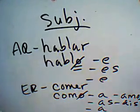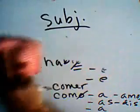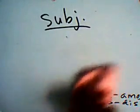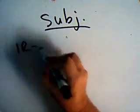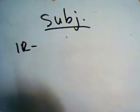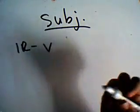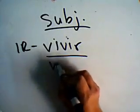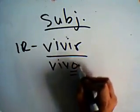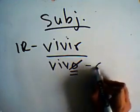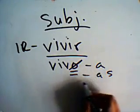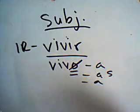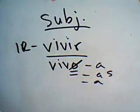This is important because command forms use the subjunctive forms in most cases. For an IR verb — let's take vivir since it's regular — take the first person singular present indicative, eliminate the -o, add the opposite vowel endings: viva, vivas, viva, vivamos, etc. The step of conjugating in the present indicative yo form is extremely important because many Spanish verbs have an irregular first person form.